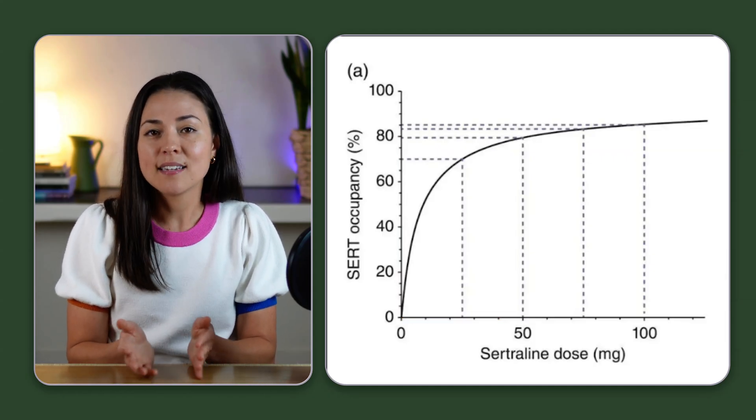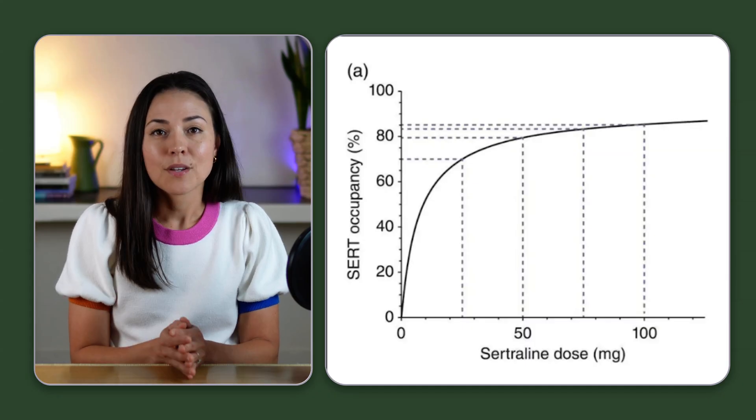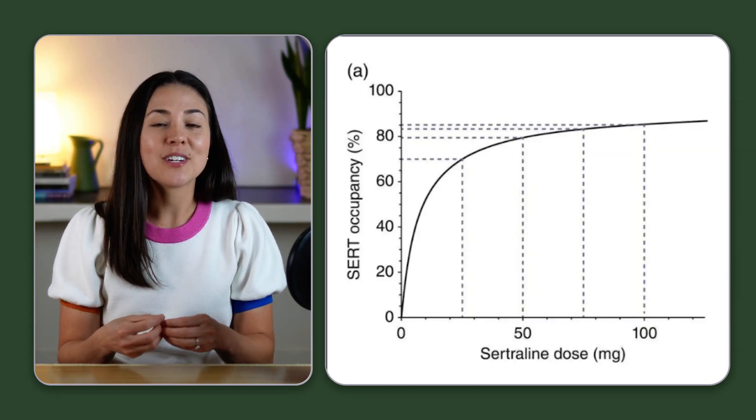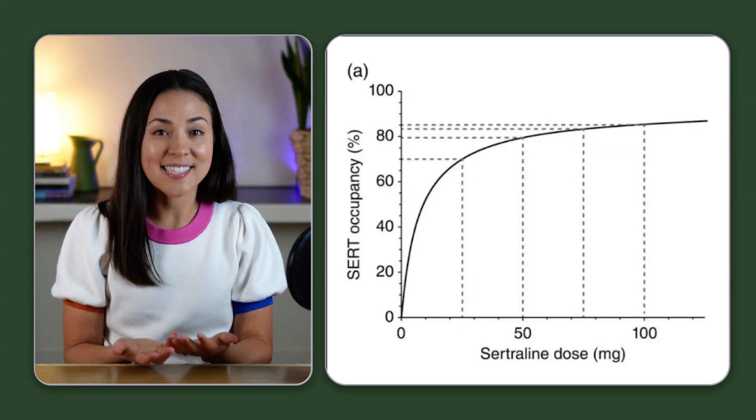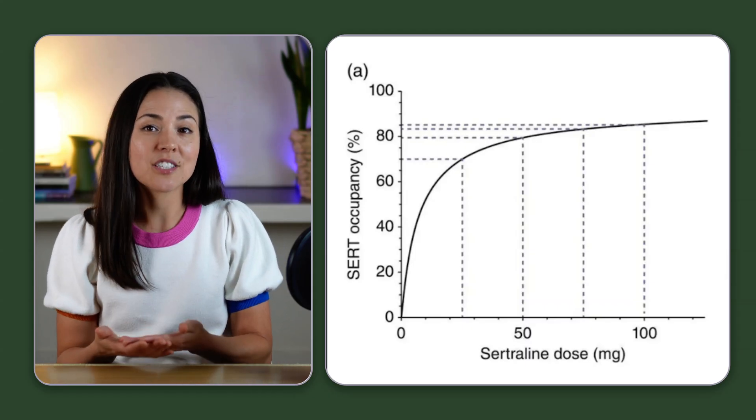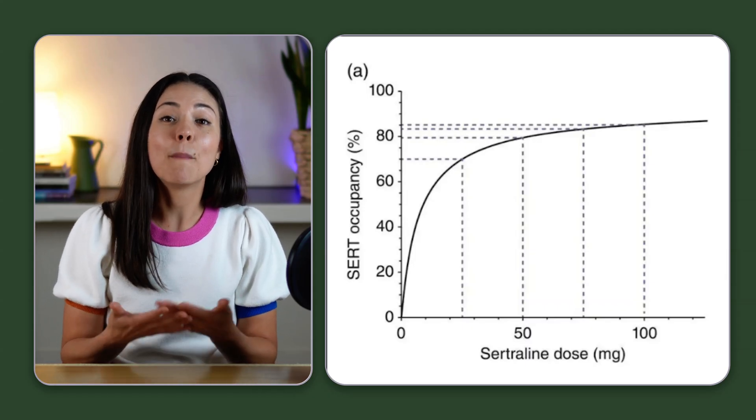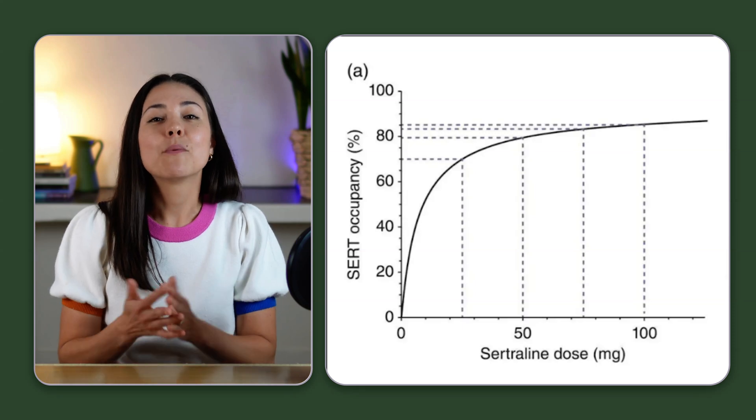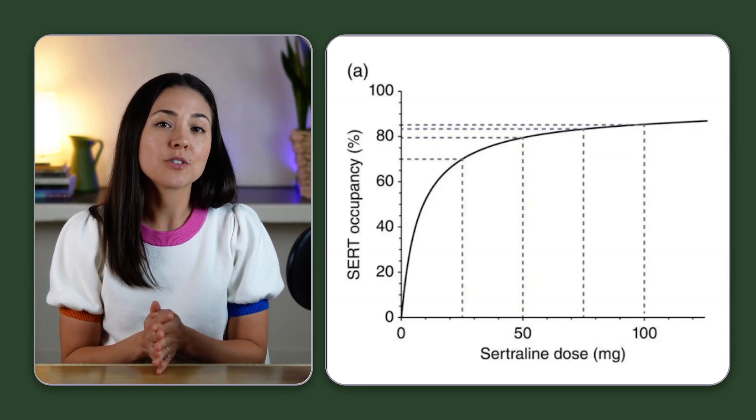Each step towards the end can feel like falling off a cliff. So what most people get wrong is treating every reduction the same. The early reductions are relatively forgiving. It's the later reductions where the body can feel bigger shifts. And that's why withdrawal symptoms often appear towards the end of a taper.